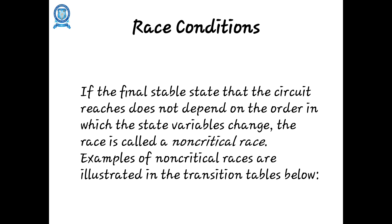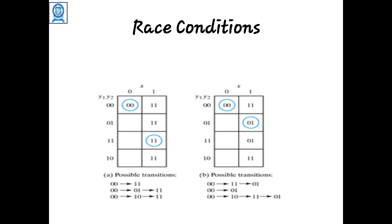A race condition occurs in asynchronous sequential circuits in case of unequal delays. For example, if there is a change in two variables due to a change in input — such as 00 to 11 — the difference in delays may cause the first variable to change faster than the second, resulting in the sequence 00 to 10 then 10 to 11. This is called a critical race.